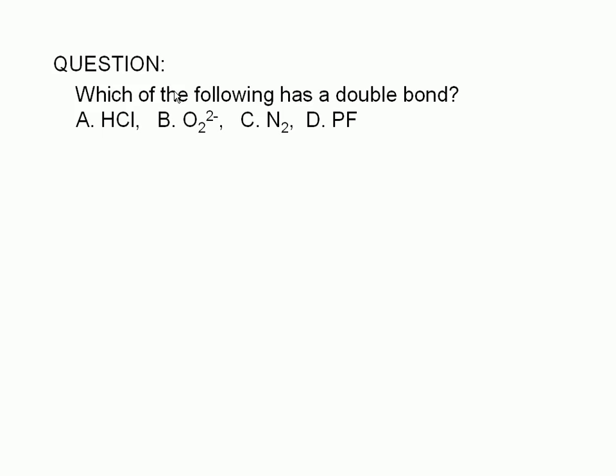Which of the following has a double bond? A hydrogen chloride molecule, a peroxide ion, a nitrogen molecule, or a phosphorus fluoride molecule?